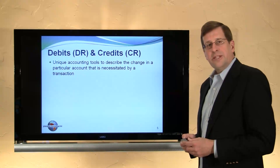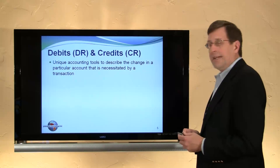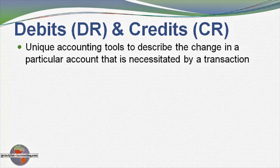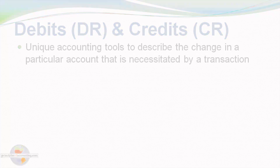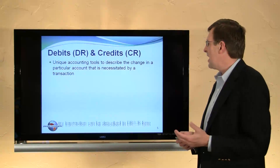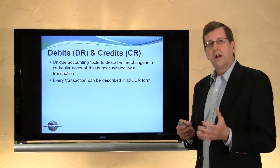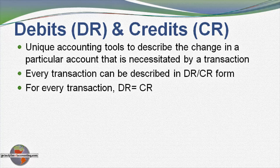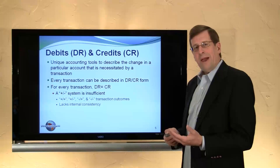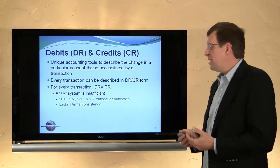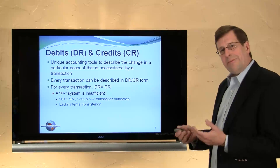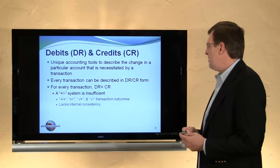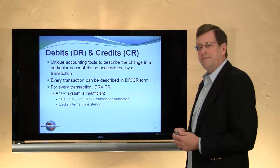Now let's think about debits and credits as the next feature to consider. Debits and credits are unique accounting tools to describe the change in a particular account that is necessitated by a transaction. Every transaction that occurs for the company can be described in its debit-credit effects, and each transaction can be described in such a way that debits equal credits. Rather than using a debit-credit system, you might think of using a system of pluses and minuses, but that's really not a sufficient system.